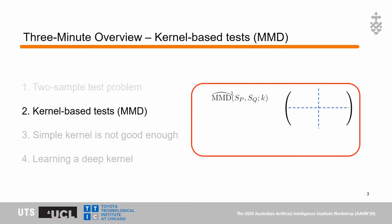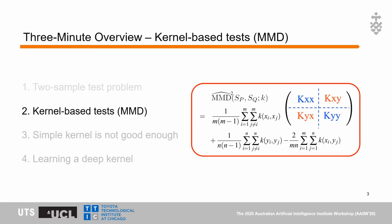To compute MMD, we need to compute three mean values. The first mean value is kxx from sample P, the second is kyy from sample Q, and the third mean value is kxy from the cross terms. MMD is calculated as the sum of the first two mean values minus two times the third mean value.